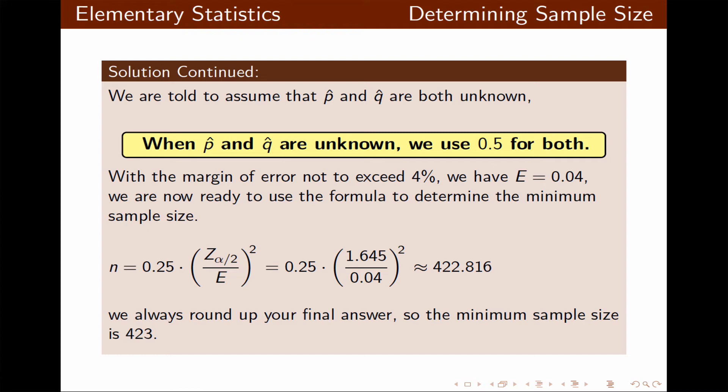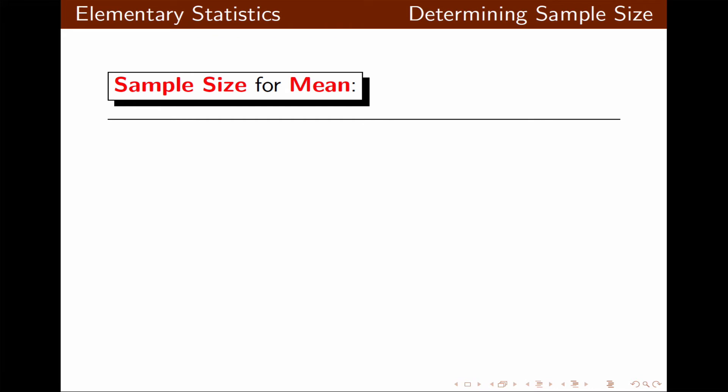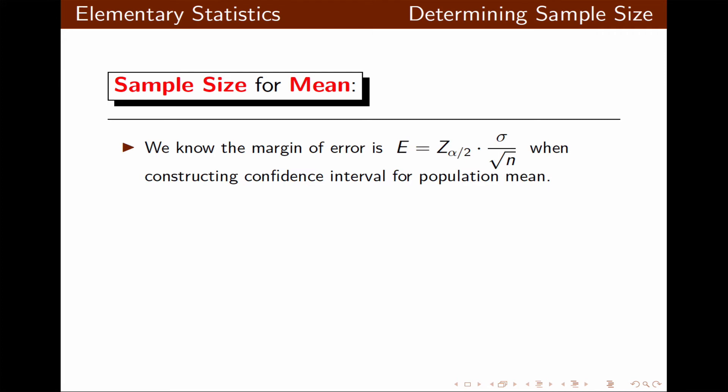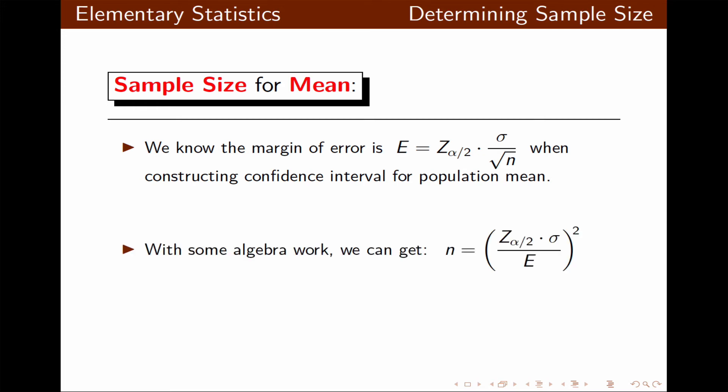Now let's take a look at sample size for mean. We know the margin of error from past was Z alpha over 2 times sigma over the square root of n. With some algebra work, we can isolate or solve for n, and n becomes the quantity Z alpha over 2 times sigma divided by margin of error e, to the second power.